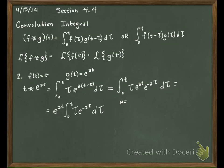So I'm going to let U equal tau, and I'm going to let DV be E to the negative A tau D tau. So DU would just be D tau, and V, if we integrate, what do we get?